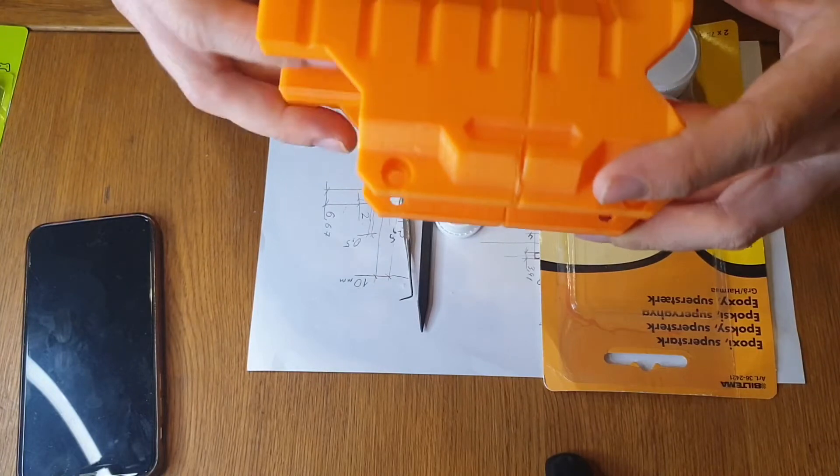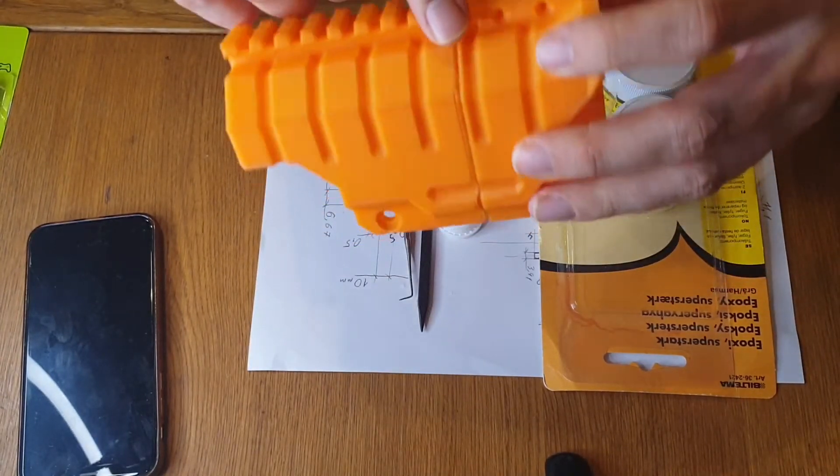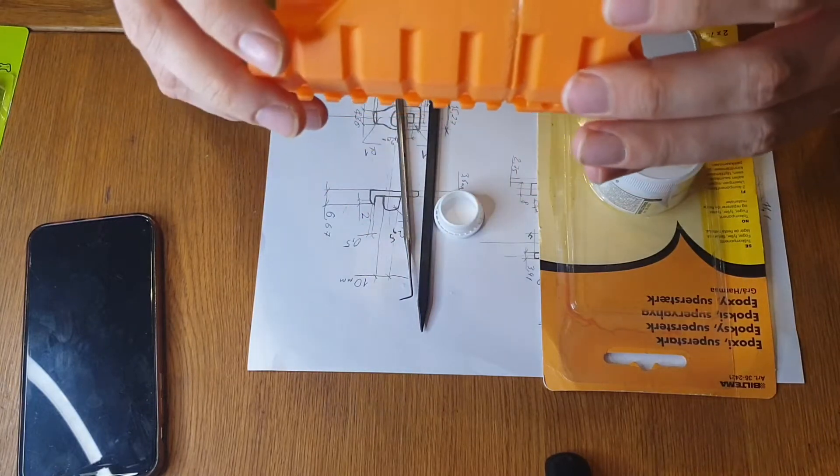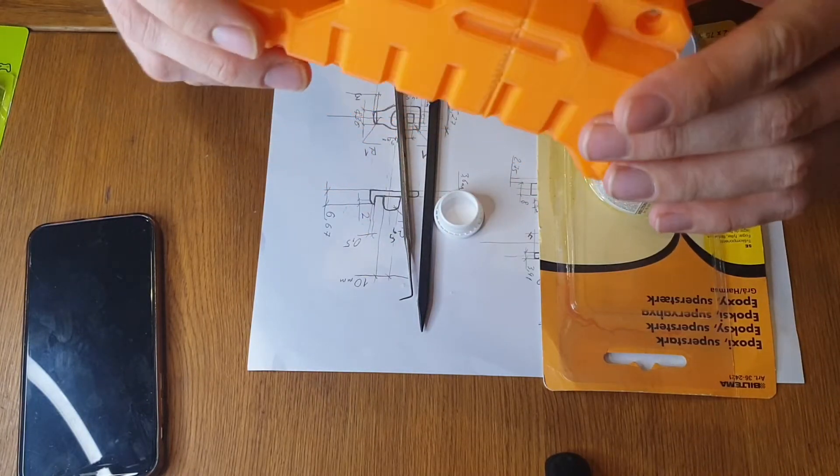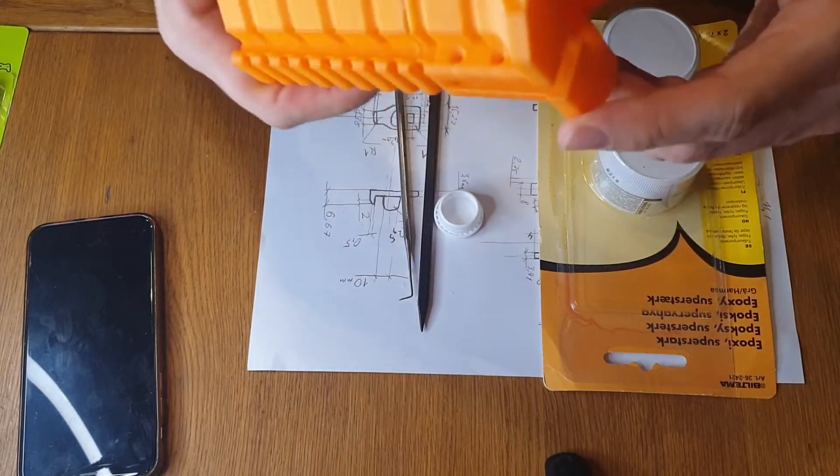So what I'm going to do, in order not to restart the print, is put a bit of epoxy all the way around here. That will make it really strong and solid like the rest of it. The infill here was 30%, so the outer layer thickness is really critical.